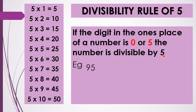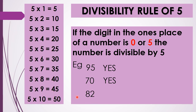Let us see some examples. 95 — is 95 divisible by 5? Yes, because there is 5 in the 1's place, so it is divisible by 5. 70 is also divisible by 5 because there is 0 in the 1's place. 82 — is 82 divisible by 5? No, because we don't find 0 or 5 in the 1's place; we have 2, so 82 is not divisible by 5.